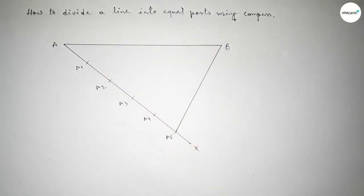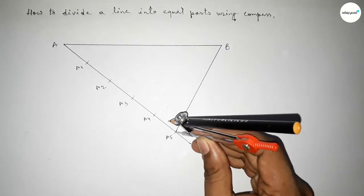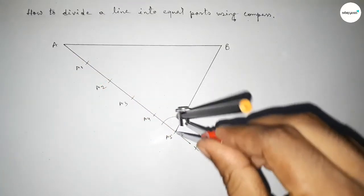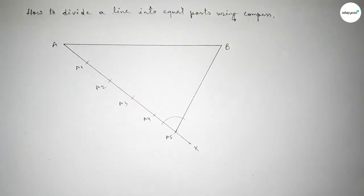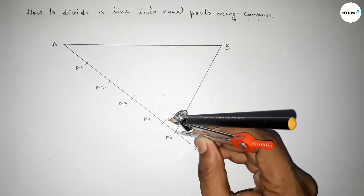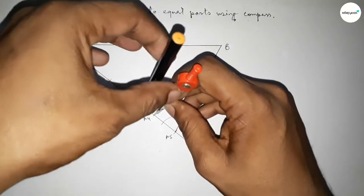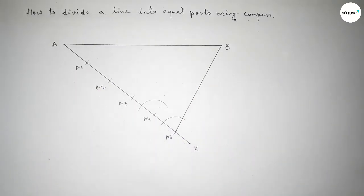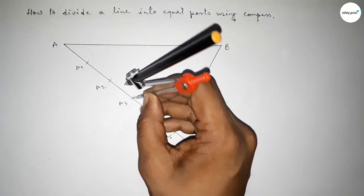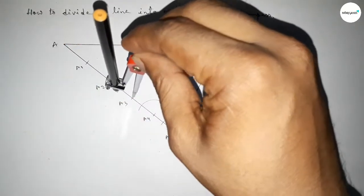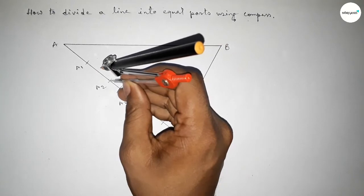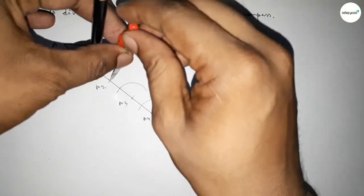Next we have to draw parallel lines through points A4, A3, A2, and A1, all parallel to line A5B. Putting the compass and taking any length, drawing an arc. With the same length, putting the compass on point A4 and drawing an arc. Similarly with the same length, putting the compass on point A3 and drawing an arc.